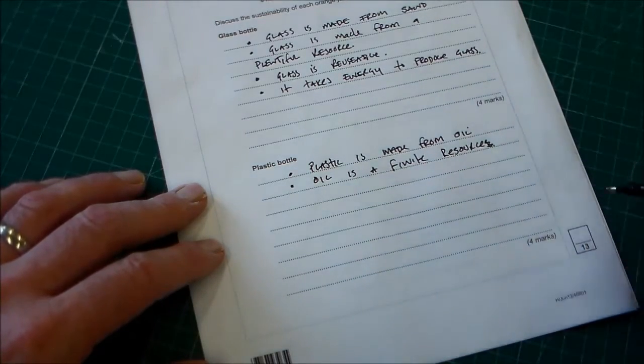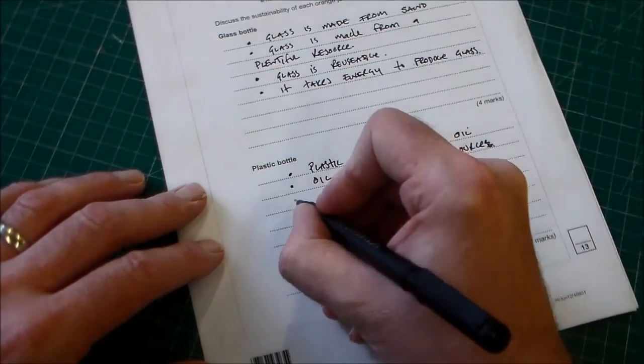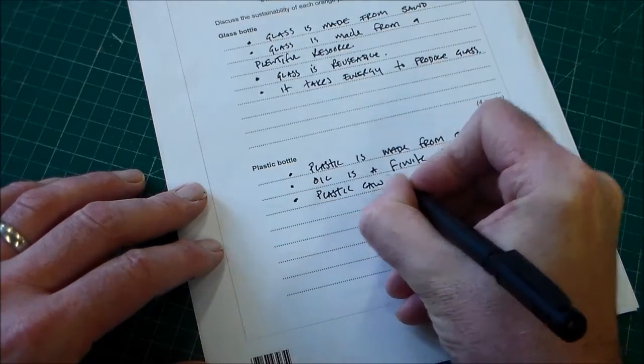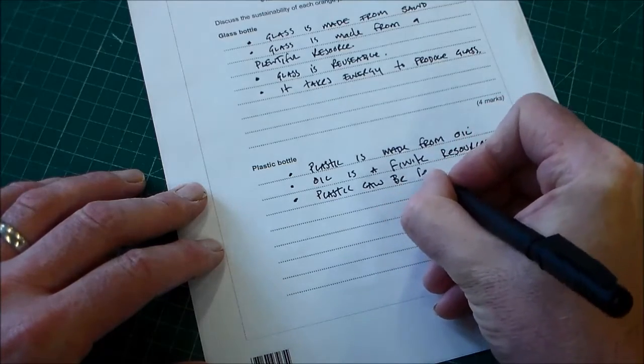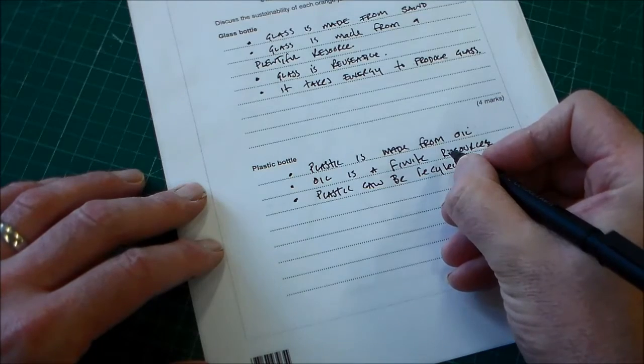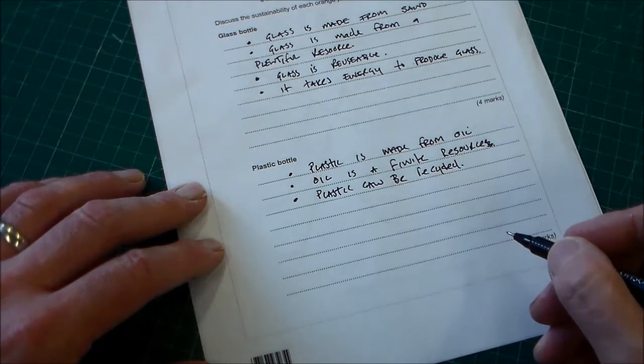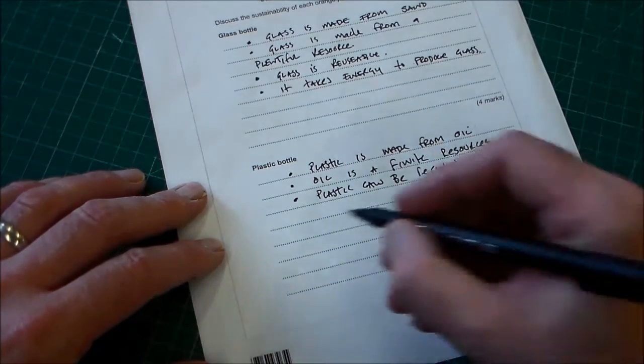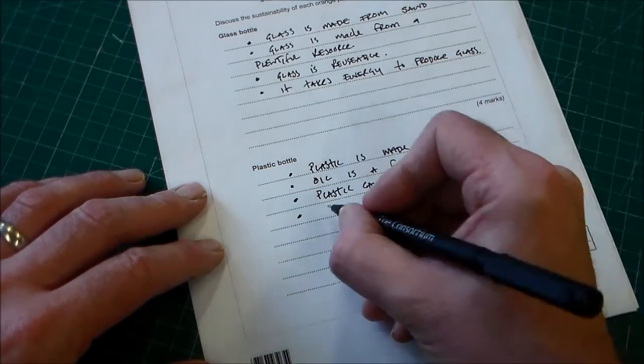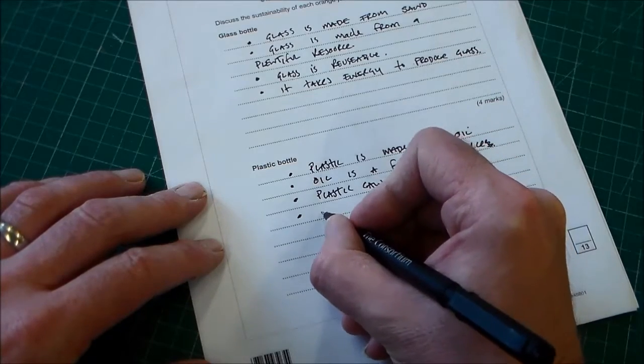What else can we say about plastic? Plastic can be recycled. So plastic can be recycled. And we've got three marks there. For our last mark, I think we can almost use the same one there, that it takes energy to produce plastic. Because that's important. It is important in sustainability.